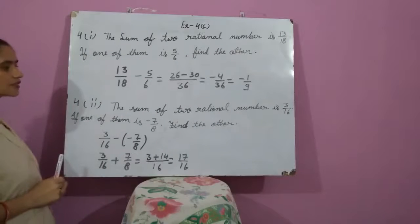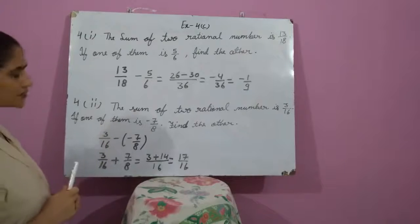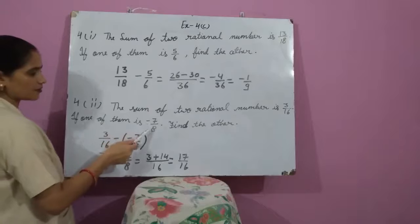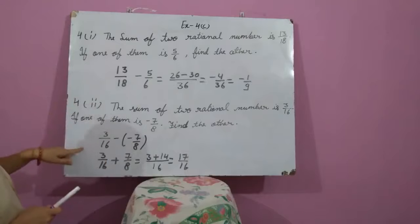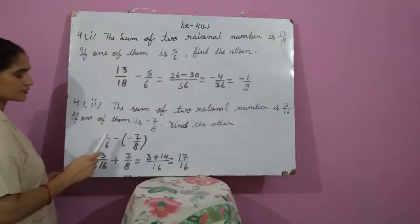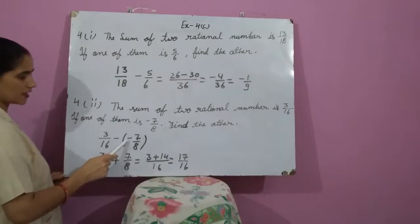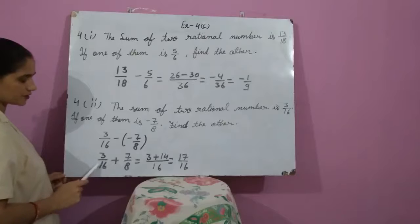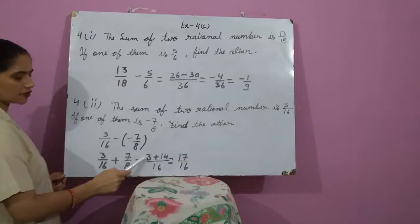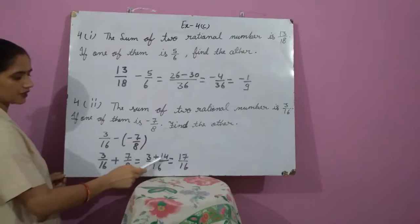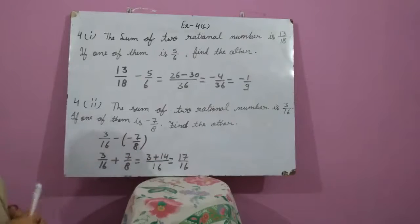Come to the second part: The sum of 2 rational numbers is 3 upon 16. If one of them is minus 7 upon 8, find the other. Like the previous part, we compute 3 upon 16 minus (minus 7 upon 8); minus minus becomes plus, giving 3 upon 16 plus 7 upon 8. The LCM is 16. After the calculation we get 3 plus 14, which gives 17 upon 16. This is the required rational number.